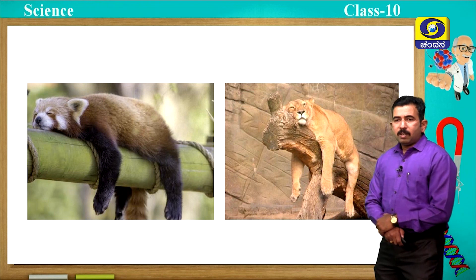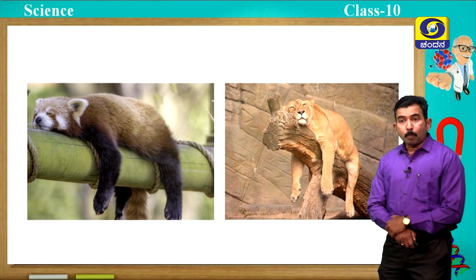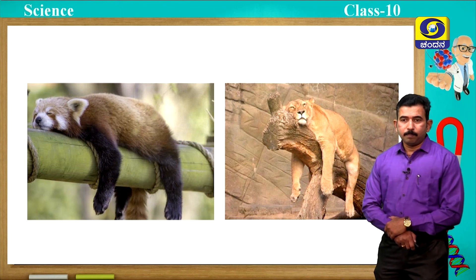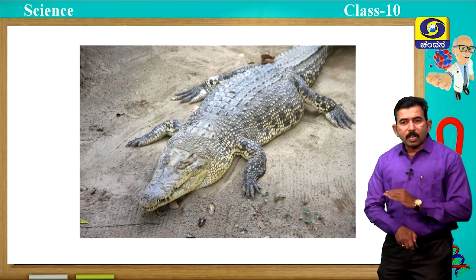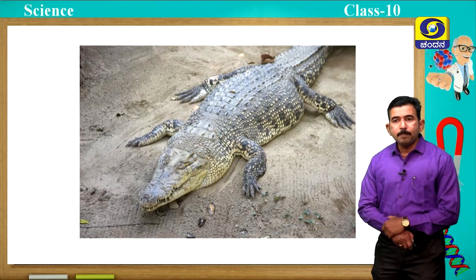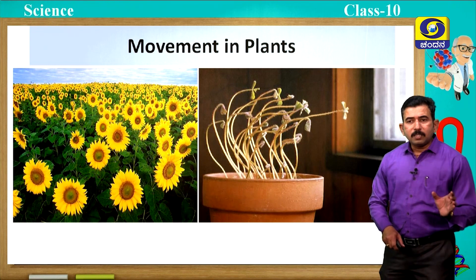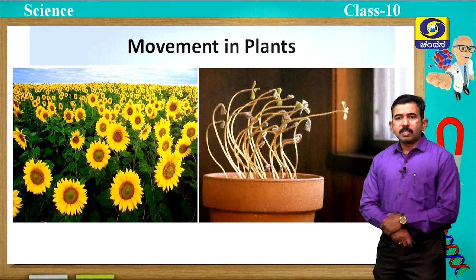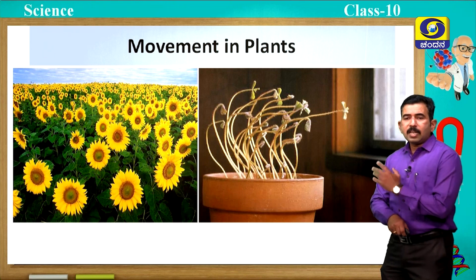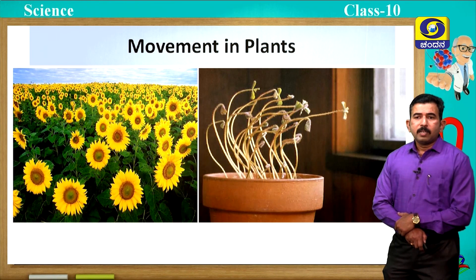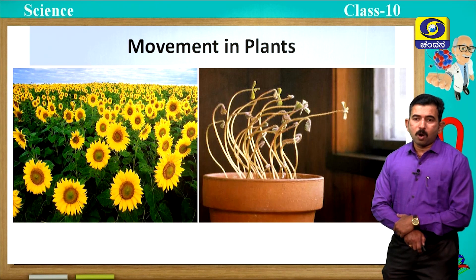Animals may be sleeping, but still you can observe movement because they are breathing — there is movement in their body during breathing. Observe this crocodile: it does not show any kind of movement, we cannot see any visible movement, but still it is living. Plants usually do not move from one place to another; they have a fixed position. The sunflower plant moves towards sunlight. In plants you can observe movement of their parts like stem, leaf, etc.